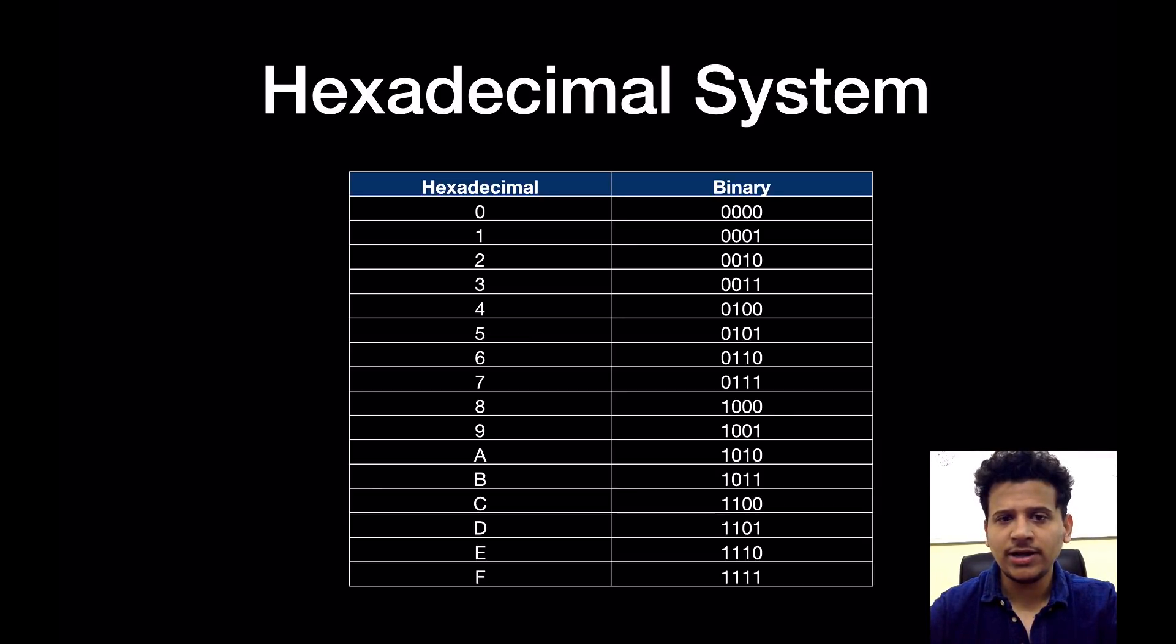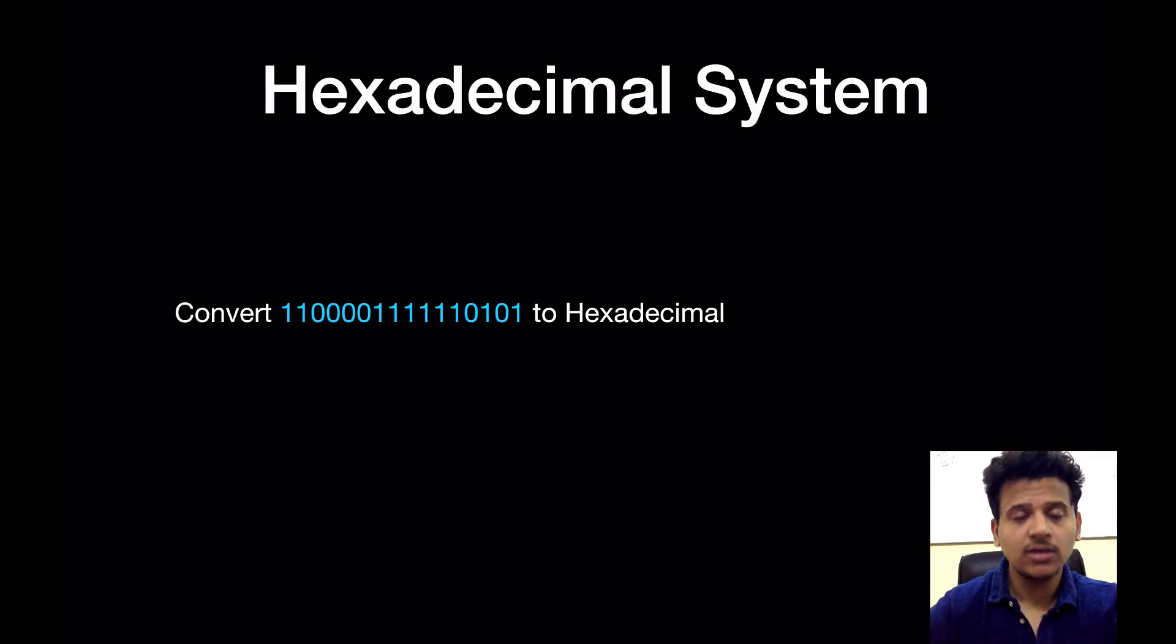This is the conversion table for hexadecimal to binary. It will start from 0 to F. As we can see, 0 will convert to 0000 and 1 is equal to 0001, till F will convert to 1111.